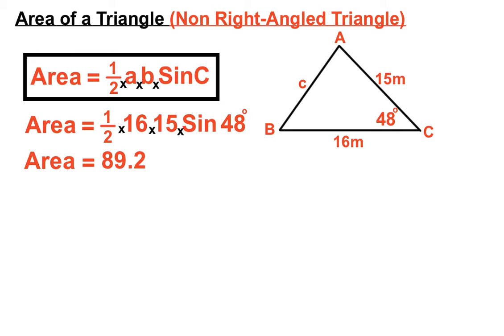When using units of meters for the original side lengths and turning them into an area, we need to use square units, so the answer will be in meters squared. I've rounded that off to one decimal place.